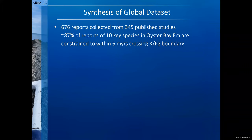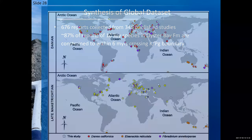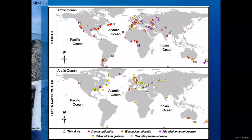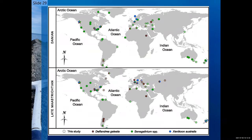A synthesis of the overall global dataset was performed as part of this study. All the world's literature — 676 reports collected from 435 published studies — shows that 87% of reports of the 10 key index species in the Oyster Bay Formation are constrained within 6 million years crossing the KPG boundary. These selected taxa are plotted across the world in relation to our location, marked with a star, and also for some of the more predominantly heterotrophic or peridinoid dinoflagellates.